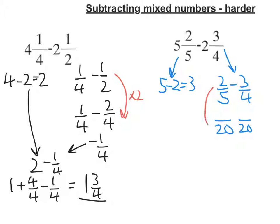Now, I've multiplied 5 to get 20 by 4, so I must multiply the top by 4, so 2 times 4 is 8. And to get from 4 to 20 on this side, I've multiplied by 5, so I must multiply the 3 by 5, so 3 by 5 is 15.